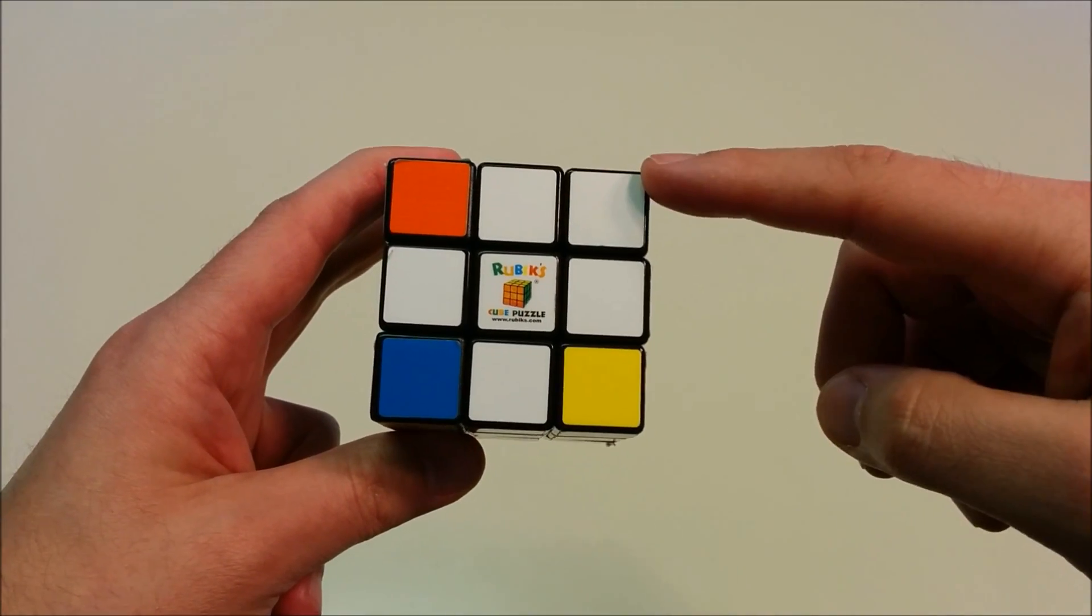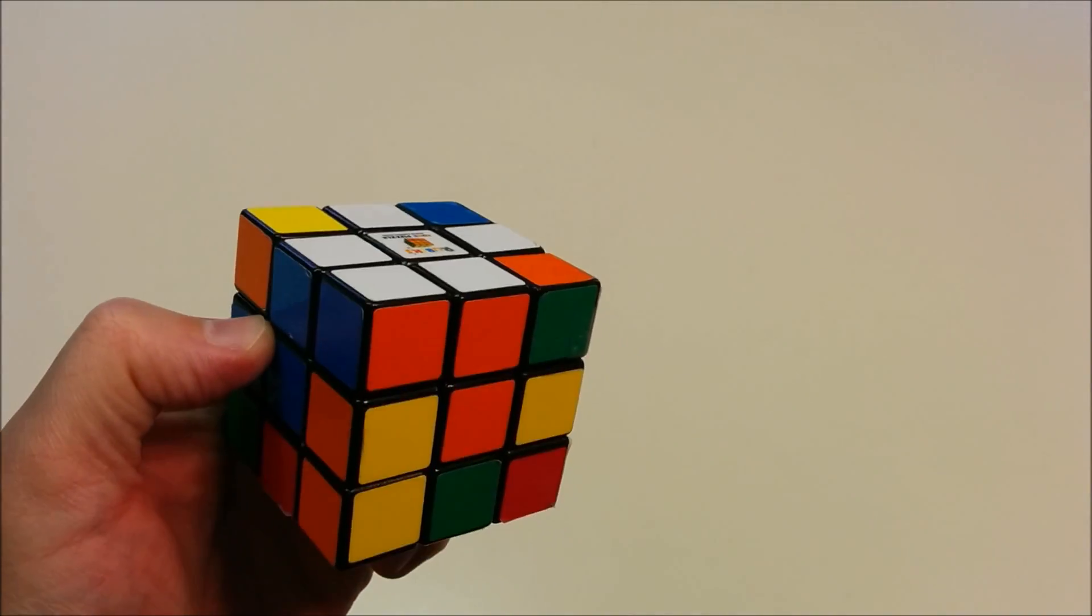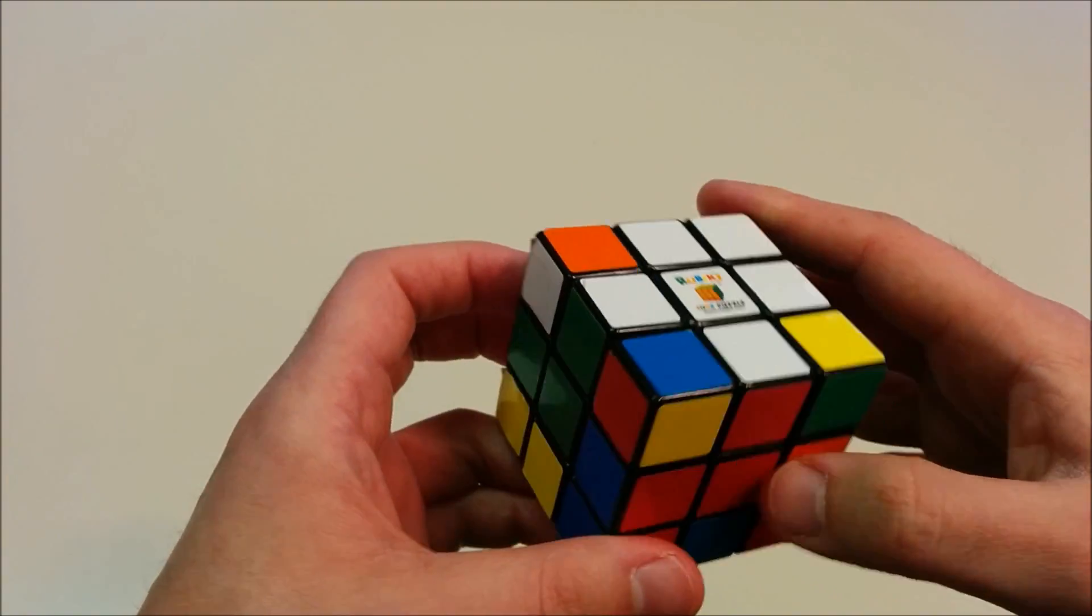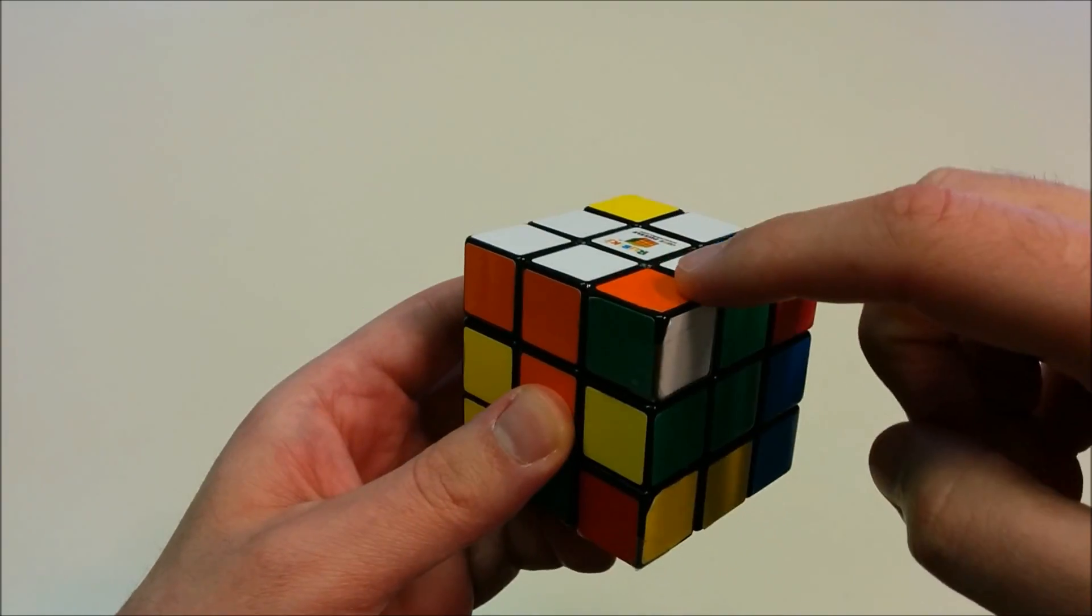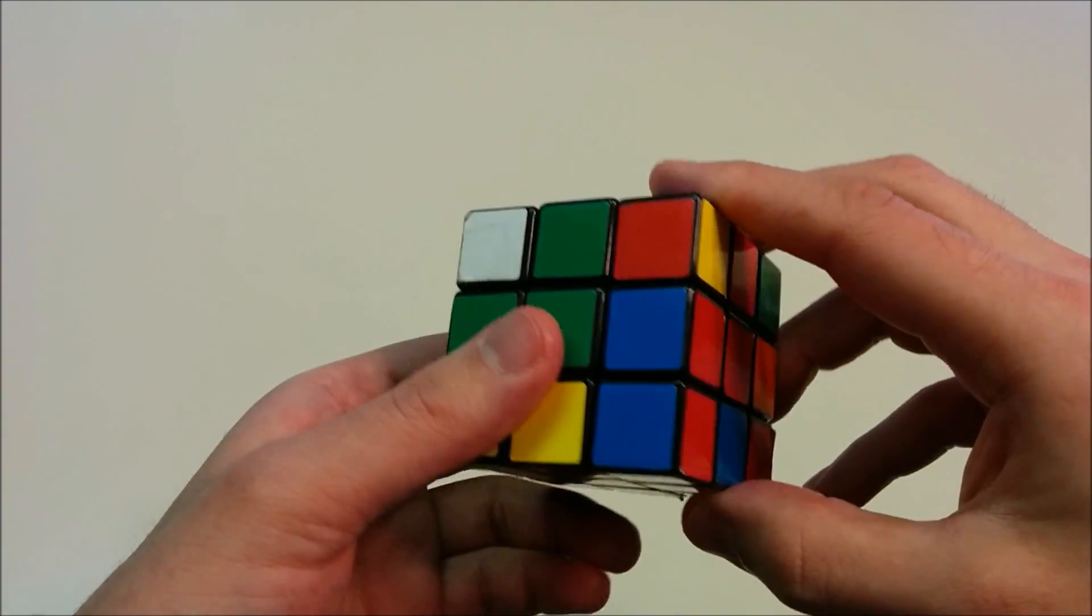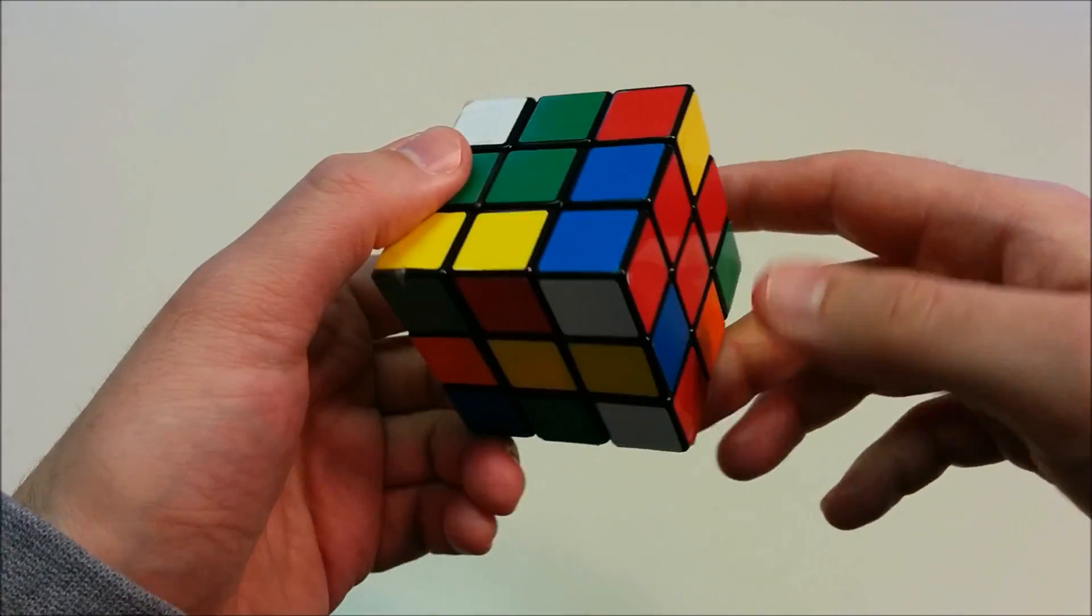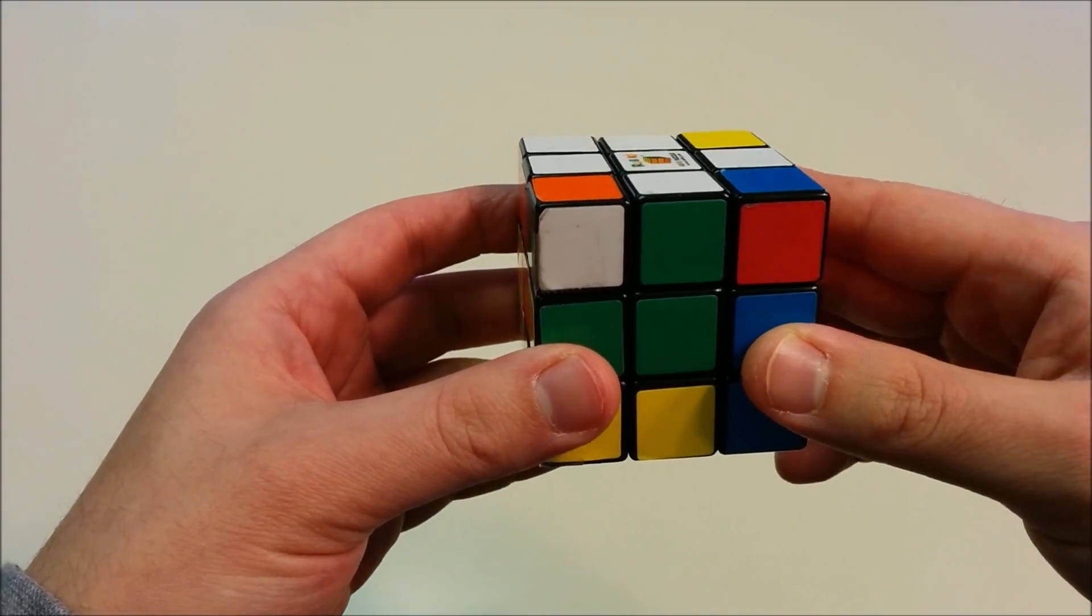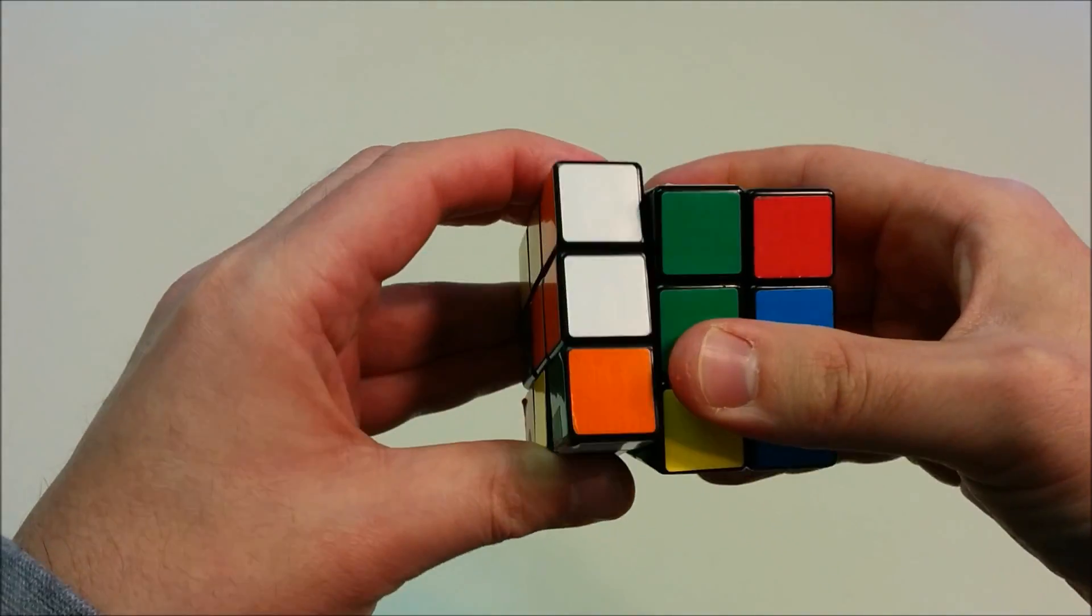In one case, you may already see a corner that's in the correct position with the correct orientation. In that case, you're lucky and you don't need to do anything. There's another case where the corner is in the right position but it's in the wrong orientation. And finally, if a corner is not already on the top layer, then it has to be on the bottom layer because the corners can only go in certain positions. So we're going to show how you can get all of these corner pieces in the right spot with the right orientation.